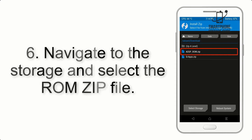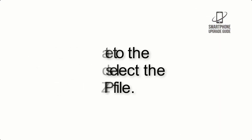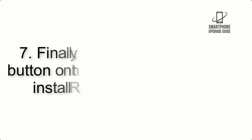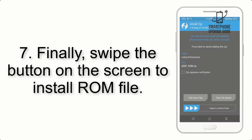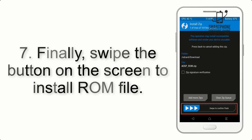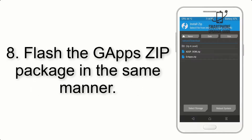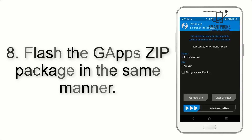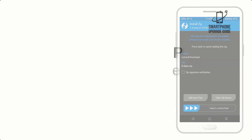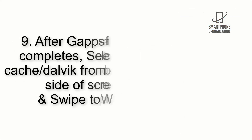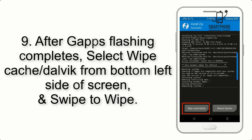Step 6: Navigate to the storage and select the ROM zip file. Step 7: Swipe the button on the screen to install the ROM file. Step 8: Flash the GApps zip package in the same manner.